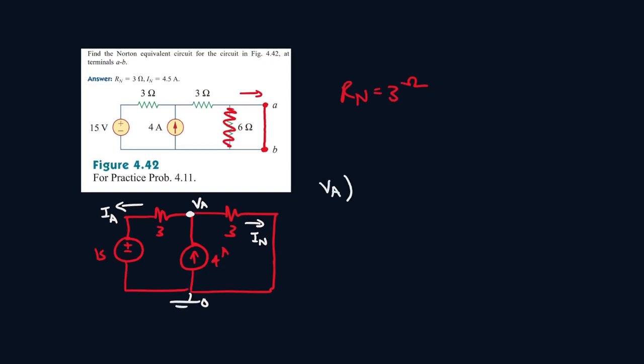for node VA, it's IA plus IN equals 4. IA is VA minus 15 over 3, plus IN is VA over 3 equals 4. So let's solve for VA.